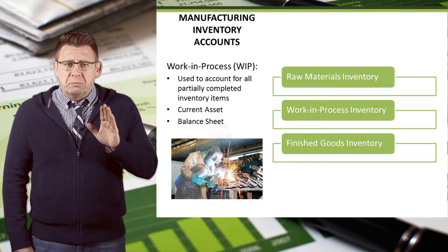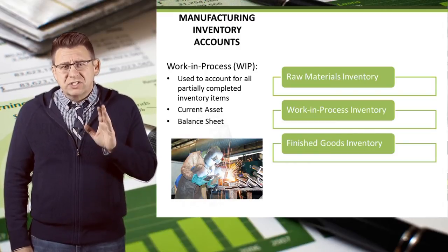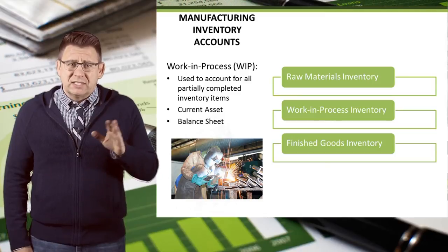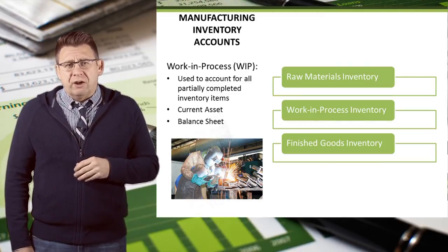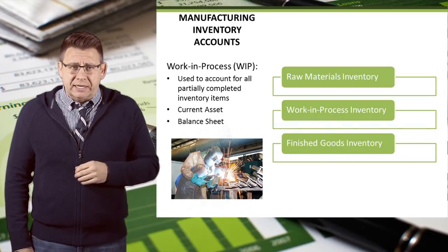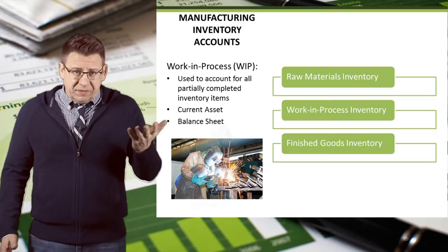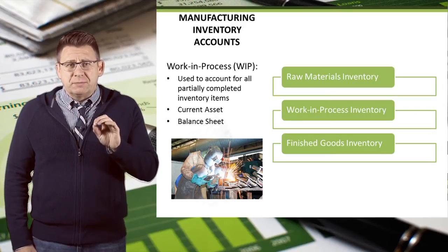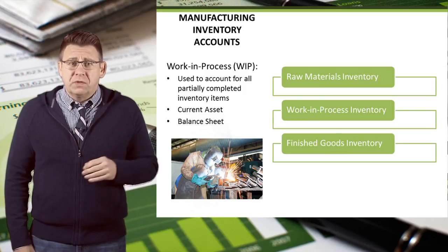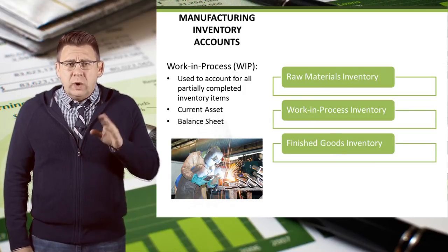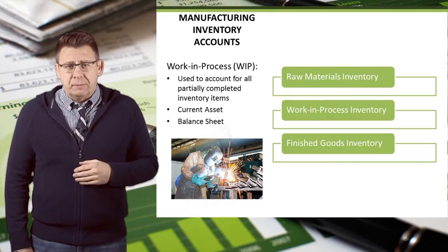The work in process inventory account — sometimes called work in progress, and most commonly abbreviated as WIP — is used to account for all partially completed inventory items at the end of the period. If, at the end of the period, an item has been started in production but not yet completed, it is accounted for in this account. WIP is an inventory account, which makes it a current asset found on the balance sheet.